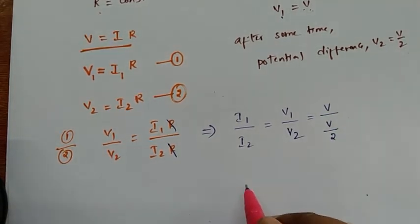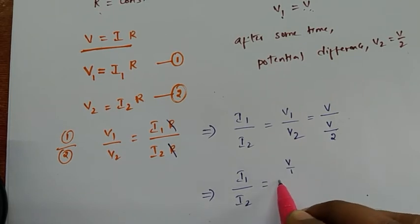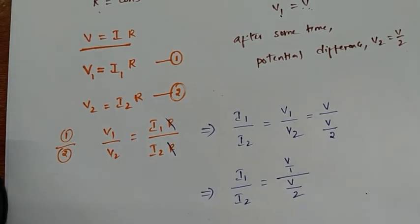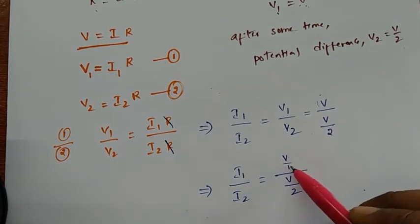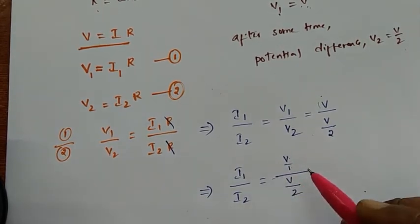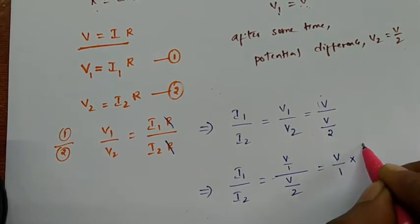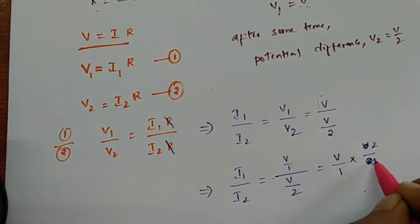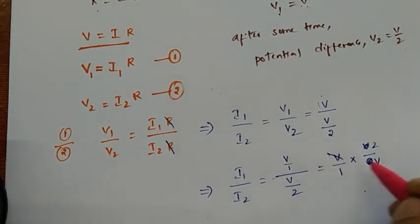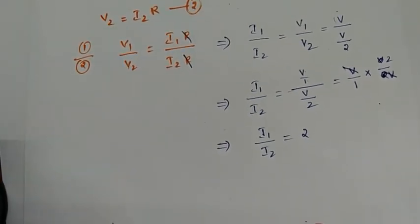Simplifying: I1 divided by I2 equals V divided by (V/2). This is in the form of (a/b) divided by (c/d), which equals (a/b) times (d/c). So V and V cancel, and we get I1 divided by I2 equal to 2.